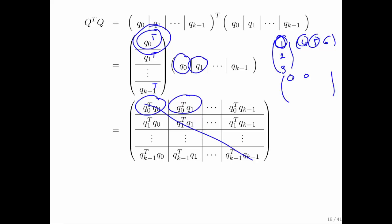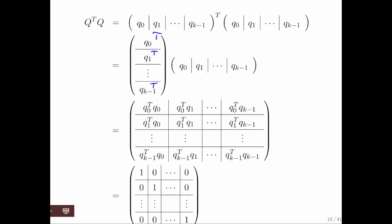We know that that means that all of those entries are equal to 1. And then the off-diagonal entries always involve dot products of two vectors that don't have the same index. And therefore, we know that those are all equal to 0 because these vectors are mutually orthonormal. And what that means is that we get the identity.